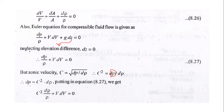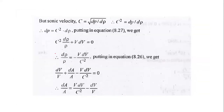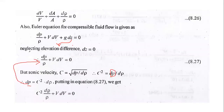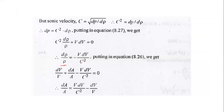Putting this into equation 8.27, we get c²·dρ/ρ + V·dV = 0, or dρ/ρ = −V·dV/c². Then substituting this into equation 8.26, we get: dV/V + dA/A − V·dV/c² = 0.